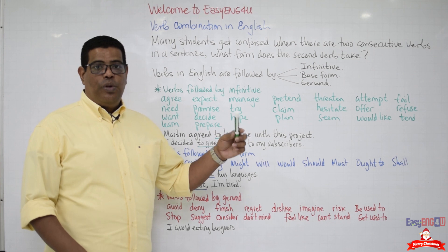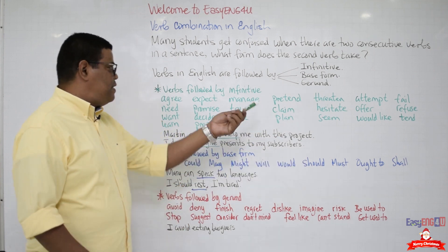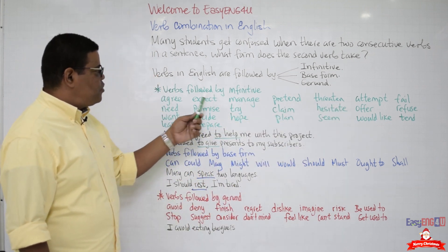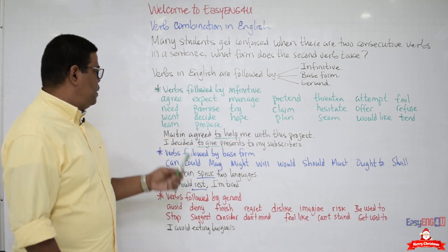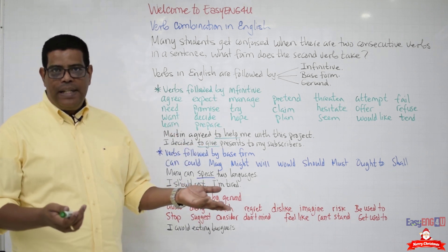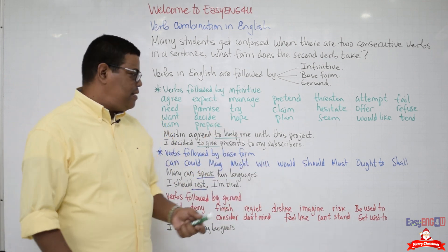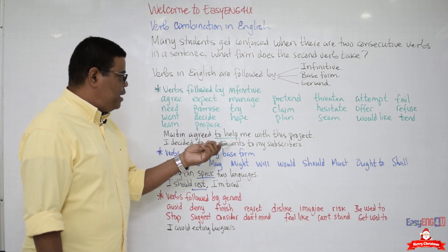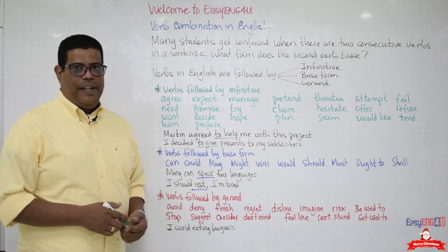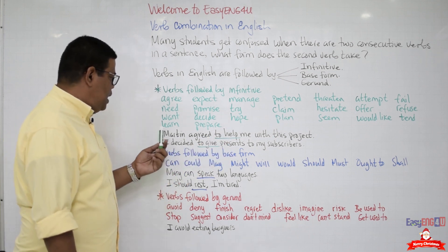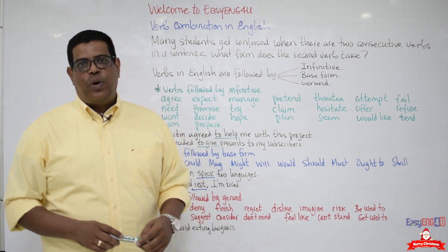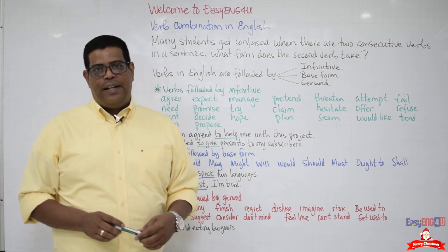Let's study which verbs are followed by another verb in the infinitive. The list includes: agree, expect, manage, pretend, threaten, attempt, fail, need, promise, try, claim, hesitate, offer, refuse, want, decide, hope, plan, seem, would like, tend, learn, aim, and prepare. For example: 'Martin agreed to help me with this project' — the verb 'agree' is always followed by another verb in the infinitive. Another example: 'I decided to give presents to my subscribers.' Stay tuned because in December we're going to be giving prizes for all subscribers to the EZ-ENG4U channel.